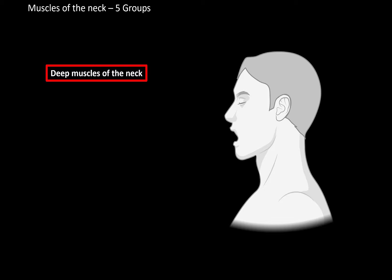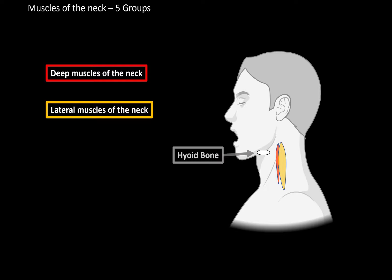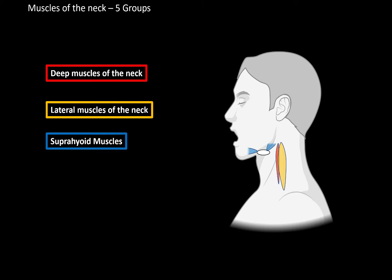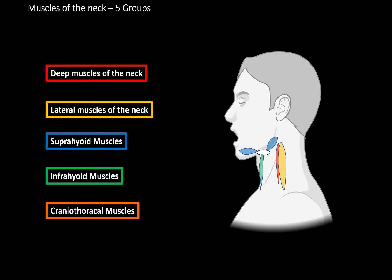First are the deep muscles of the neck — those are the deepest, close to the vertebrae. Then we have the lateral muscles of the neck. The other two groups are related with the hyoid bone: the suprahyoid are located above the hyoid bone, and the infrahyoid are located below the hyoid bone, and both groups attach to it. Then we have the craniothoracic muscles, which go from the cranium to the thorax.